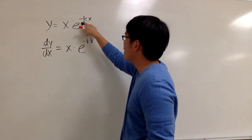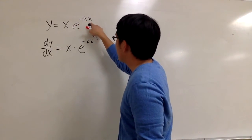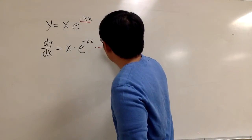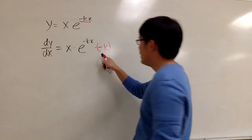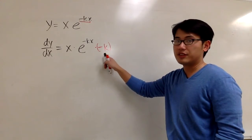In this case, we are talking about k, so negative kx has the derivative of negative k, and we just have to multiply by negative k, because of the chain rule.